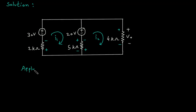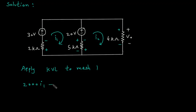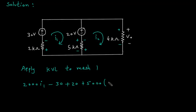Now we will apply KVL to mesh 1. Let's say we will start from here. So this will be 2 kΩ or 2000 × I1, minus 30, plus 20, plus 5000 × (I1 minus I2). Because the 5 kΩ resistor is common between mesh 1 and mesh 2, so we use I1 minus I2. This equals 0.